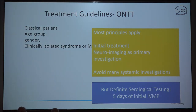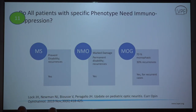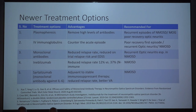Coming briefly to treatment: most principles of the ONTT apply. Acute phase management is five days of IVMP, followed by second-line treatment with plasmapheresis if there is poor response. In the chronic phase, specific immunomodulators are needed. It is very important to give these for MS and NMO given the higher risk of progressive neurological disability. In MOG, fortunately 70% of patients do not have recurrence, so immunomodulators can be reserved for recurrent cases. Plasmapheresis and IVIG are becoming standard of care for poor recovery in optic neuritis and NMO.